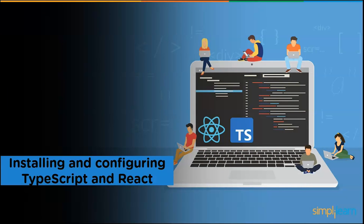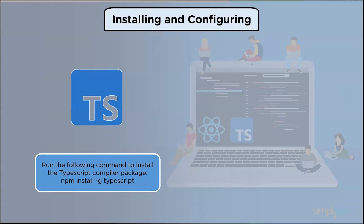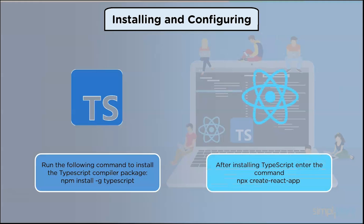Before we install TypeScript, we need to install Node.js. Go to the Node.js official website and install Node.js from there. Once Node.js is installed, go to the command prompt and run the command 'npm install -g typescript' to install TypeScript globally. To verify installation, run 'tsc --version' to check the version of the TypeScript compiler. Next, to install React and create a React project, run 'npx create-react-app', which will create a simple folder structure, install all necessary modules, and get the project up and running.